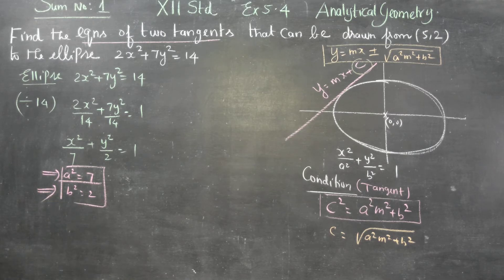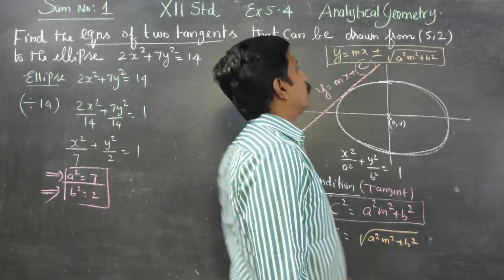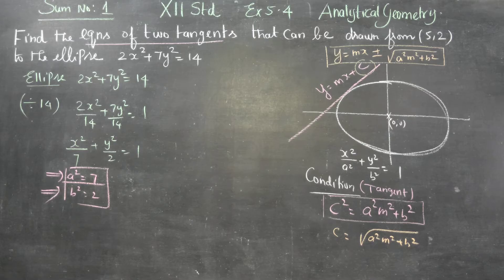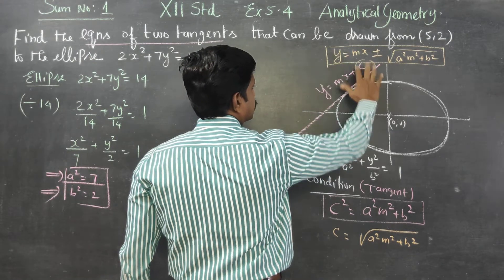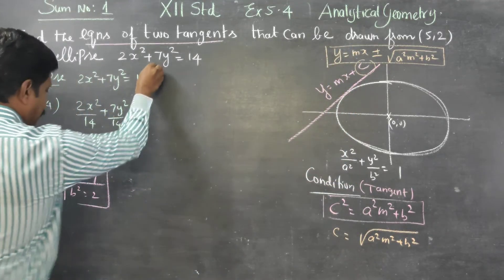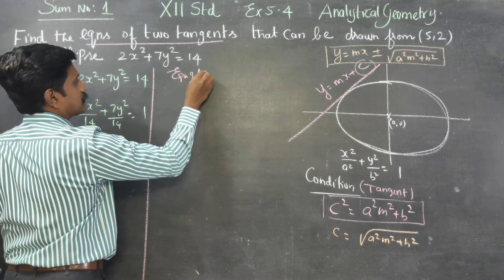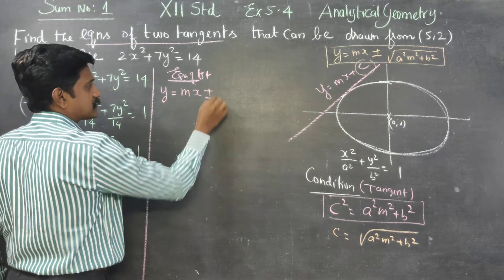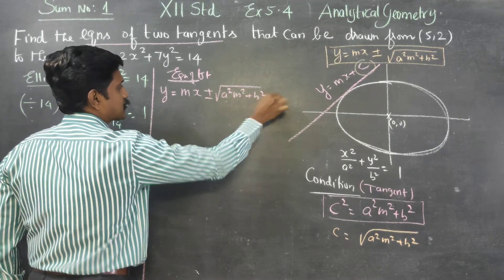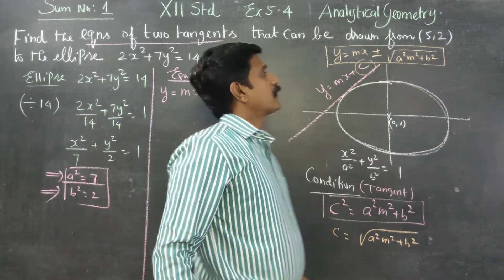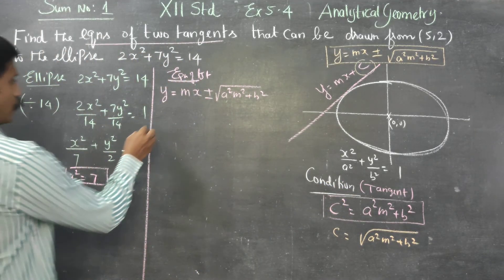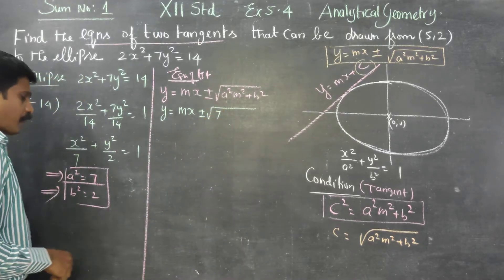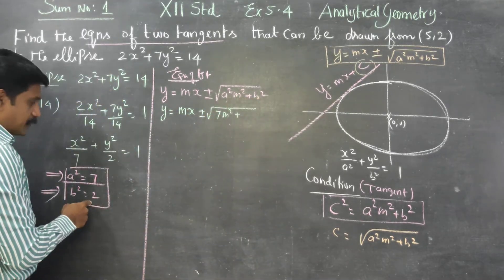Now, coming to the tangent drawn from the point (5,2) to the ellipse. I am going to find the values of m. The equation of tangent is y = mx ± √(a²m² + b²). I know a² = 7 and b² = 2, but I don't know m. The point (5,2) lies on the tangent, so I can substitute x = 5 and y = 2.